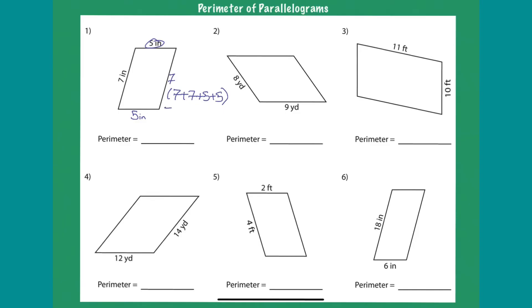So what's the answer? Seven plus seven is fourteen. Fourteen plus five is nineteen. Nineteen plus five is twenty-four. Hence your answer is twenty-four. So your answer here is twenty-four inches. Do not forget the unit at the end.